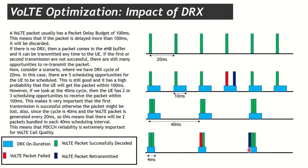For VoLTE QCI 1, as per 3GPP, the packet delay budget is 100 milliseconds. If a packet is delayed by more than 100 milliseconds it will be discarded — the packet will be lost. If this packet is again unsuccessfully decoded, the eNB retransmits on the next opportunity, which is another 40 milliseconds away. The packet was already delayed 20ms, plus 40ms for the first retransmission equals 60ms, and a second retransmission adds another 40ms — totaling 100ms.